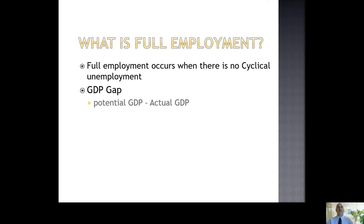You'll also discover the idea of full employment — the level of economic activity when there is no cyclical unemployment. We recognize there might still be frictional and structural unemployment, but full employment means no cyclical unemployment. At full employment, we have a certain potential GDP we could produce. However, when unemployment is higher, there's a gap between what we're actually producing and what we could produce — that's the GDP gap.